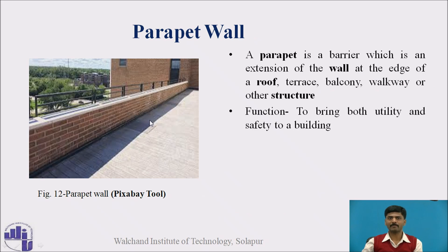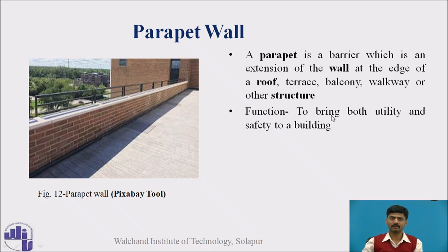Next is the parapet wall. At the top portion of the slab, we provide the parapet wall. The parapet is a barrier which is an extension of the wall at the edge of the roof. It may be glass, steel, or brick masonry. We provide it at the end portion of the slab — at the edge of the roof, terrace, balcony, or walkway. The function of the parapet is to bring both utility and safety to a building.